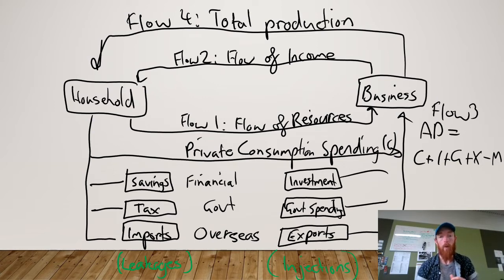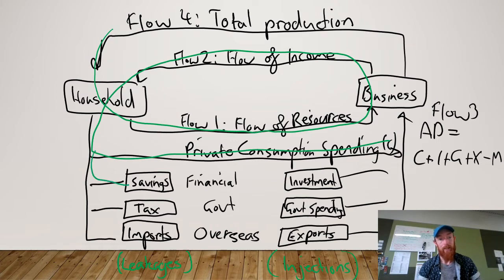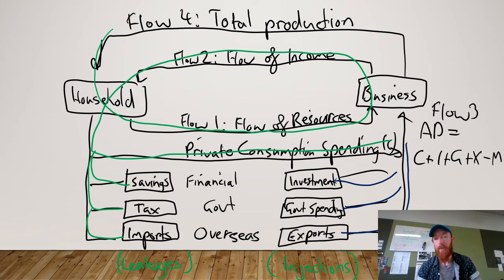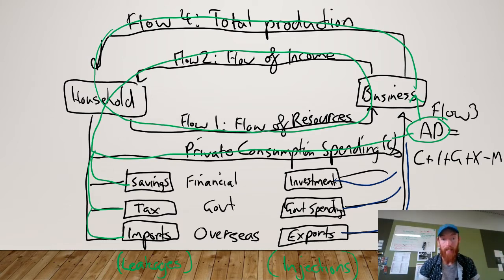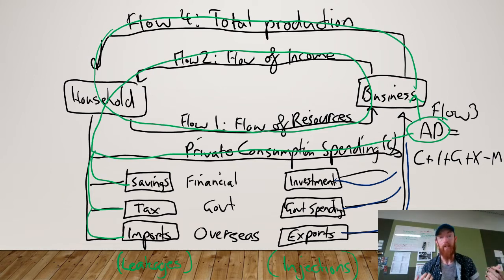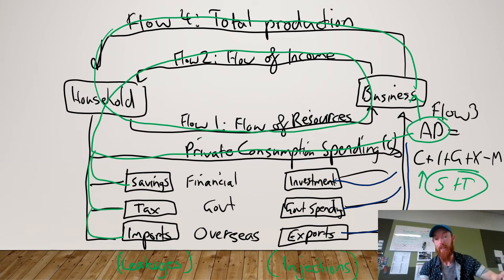To produce, businesses need resources from households. So the cycle keeps flowing: households provide resources to businesses, businesses provide income, households spend some of that money, some goes to savings, some to tax, some to imports. At the same time, businesses invest, the government spends, and other countries buy our goods and services. All of that adds up to create the total level of aggregate demand, sending signals to businesses who then produce goods and services. Notably, savings and tax are not included in the AD calculation because they're not actually leaving the economy — they're just not contributing right now.